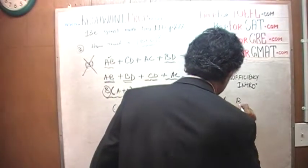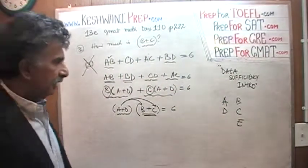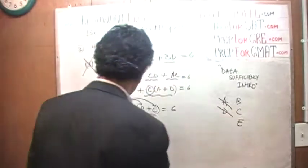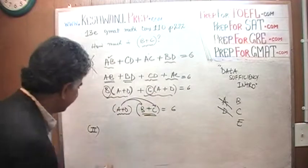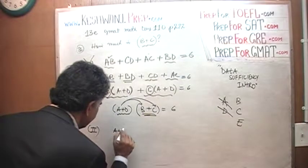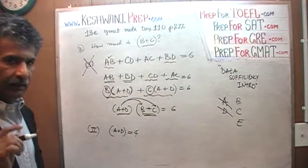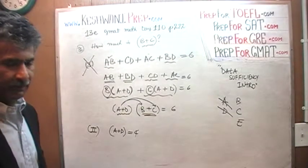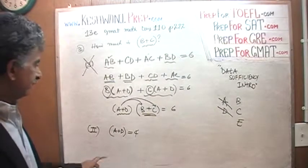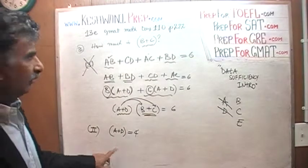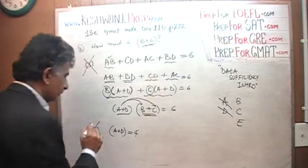Because the first statement by itself does not do the job, the answer cannot be A or D. Now let's look at the second statement. In the second statement they tell us that a plus d is 4. But simply knowing that a plus d is 4 is not going to help us figure out what b plus c is. So the second statement by itself is also no good, and therefore the answer cannot be B.